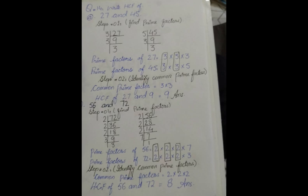The first one is 27 and 45. We'll find its factors starting from the smallest number. For 27, 2 doesn't work because it's odd. 3 nines are 27, then 3 threes are 9, then we get 3.